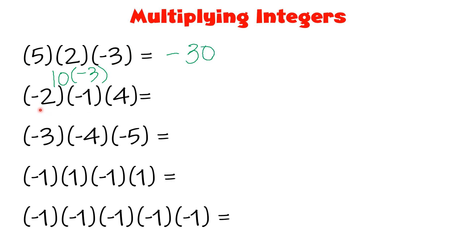How about the second one? We have negative 2 times negative 1 times positive 4. Let us multiply first negative 2 and negative 1. When multiplying 2 negative integers, the sign must be positive — so 2 times 1 is positive 2. Then multiply by positive 4: 2 times 4 is equal to positive 8.